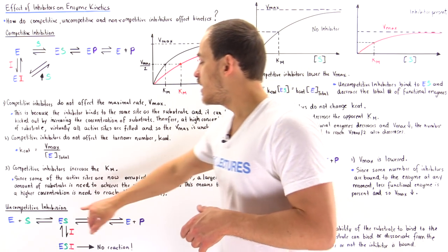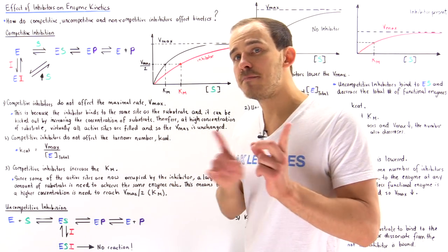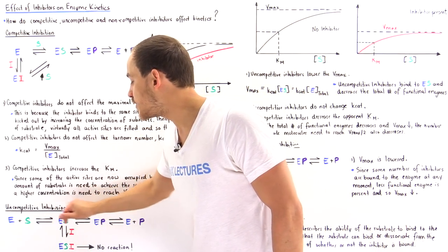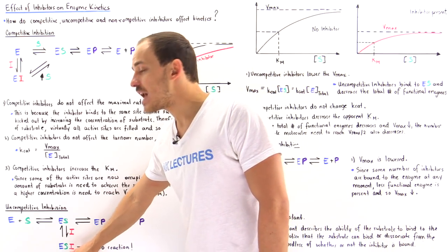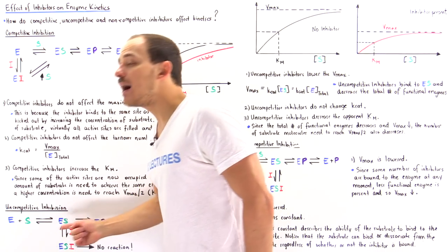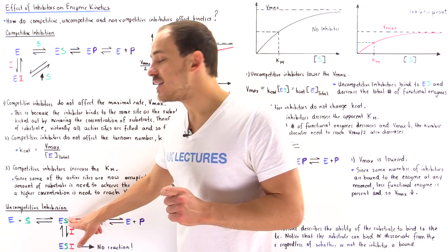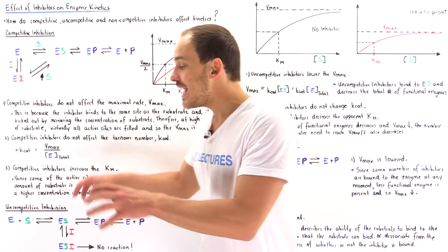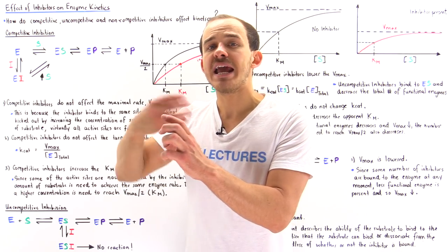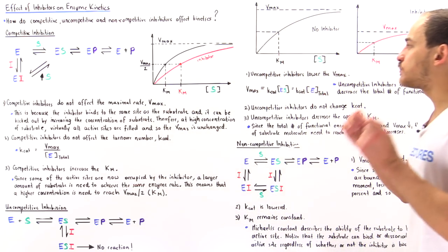In the absence of the inhibitor, the enzyme-substrate complex will simply form the product, which then dissociates. But in the presence of the inhibitor, that inhibitor binds onto the allosteric site of the enzyme-substrate complex, forming the enzyme-substrate-inhibitor complex. Once this complex is formed, no reaction takes place, because the inhibitor keeps the substrate inside the active site and prevents the active site from catalyzing the transformation of that substrate into the product.